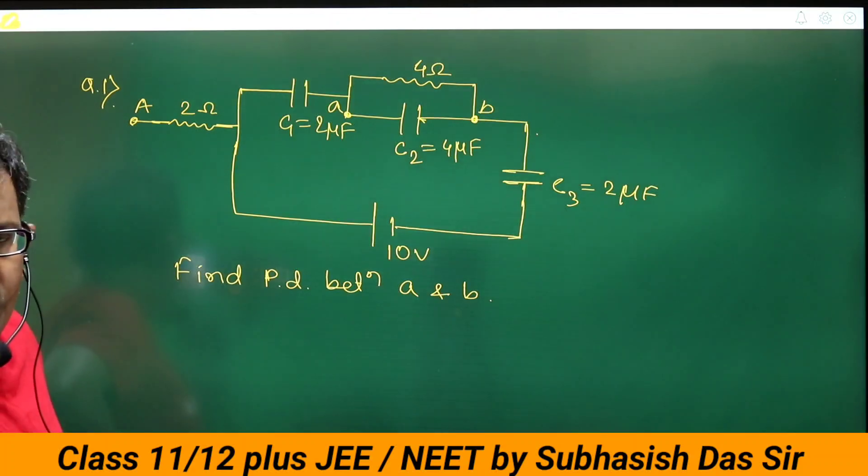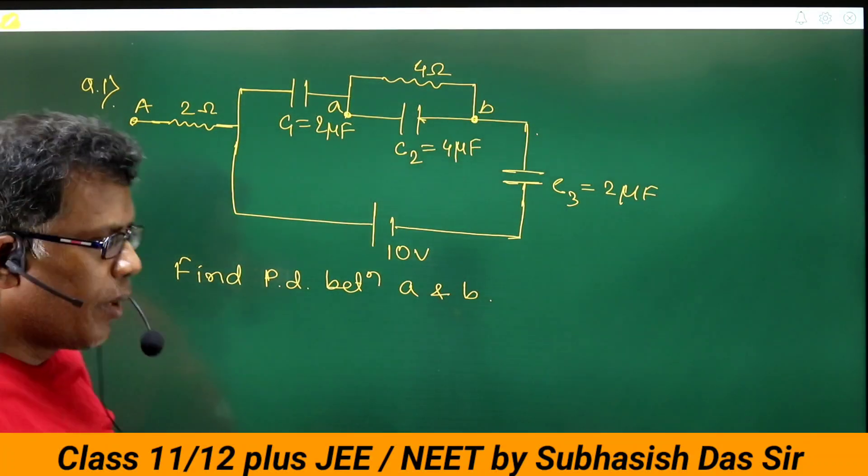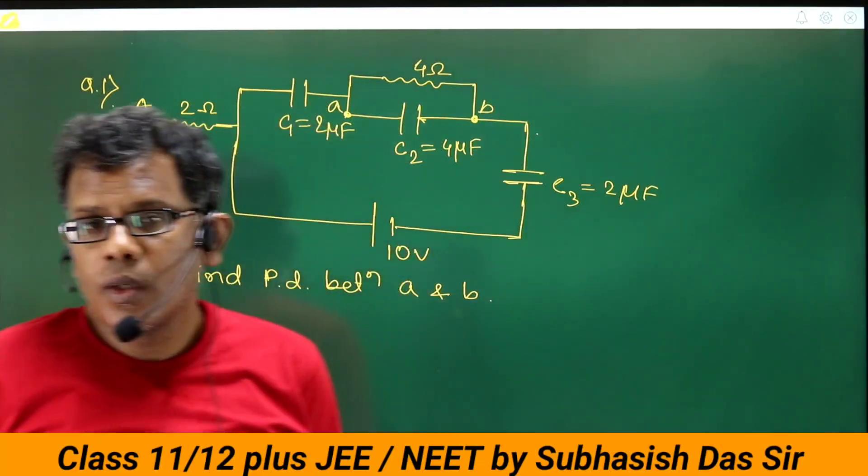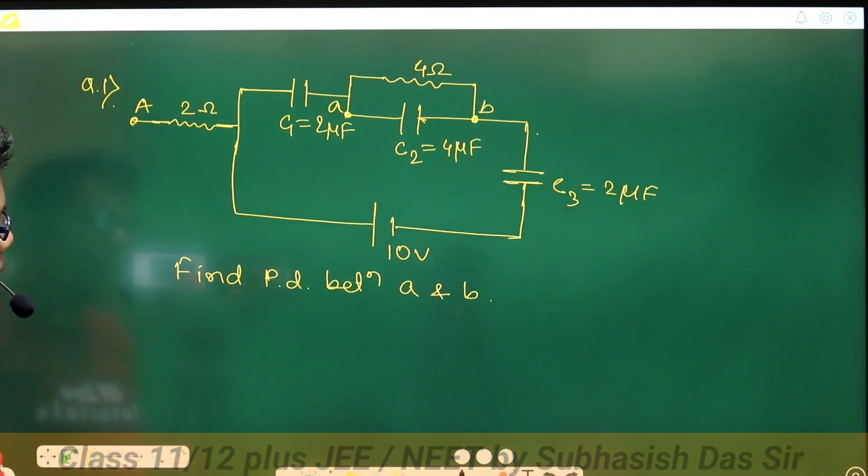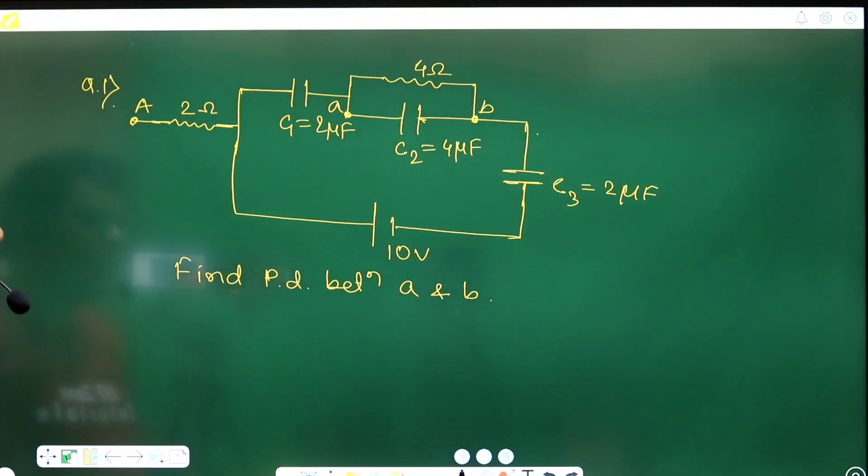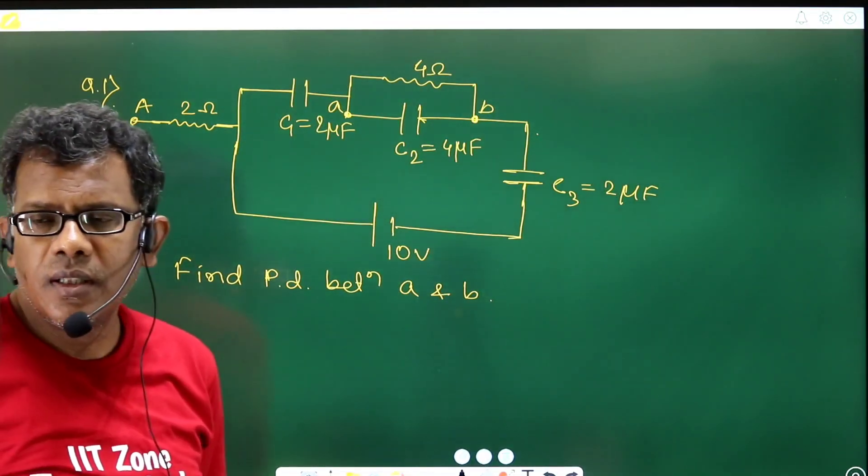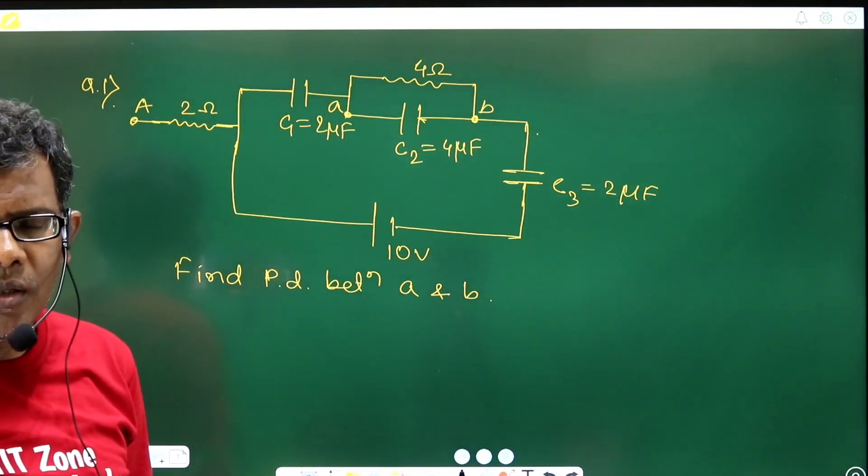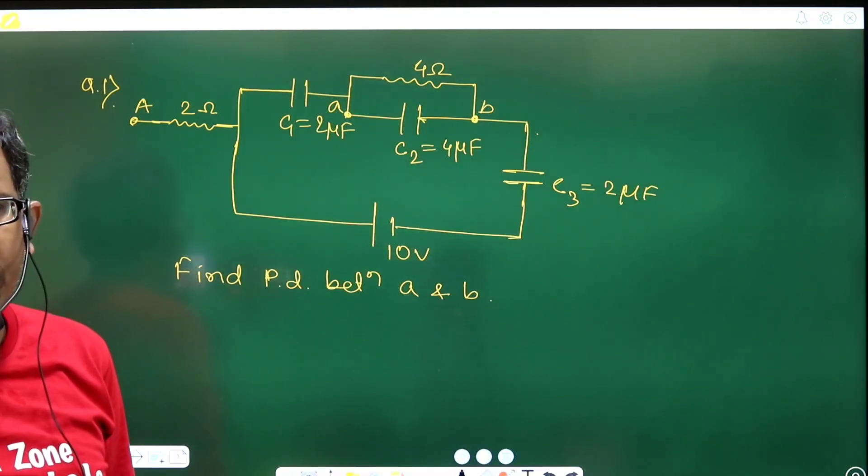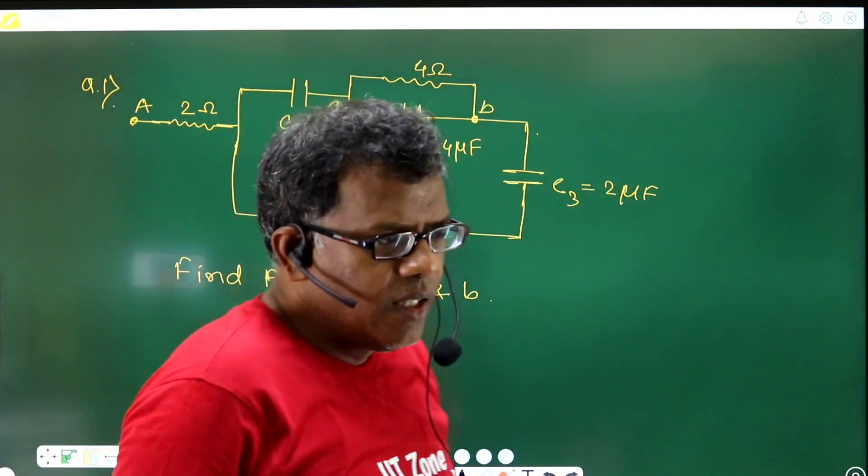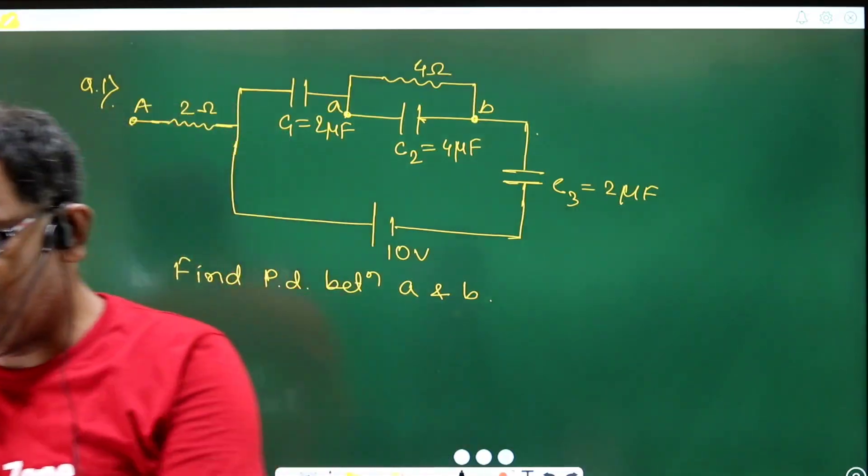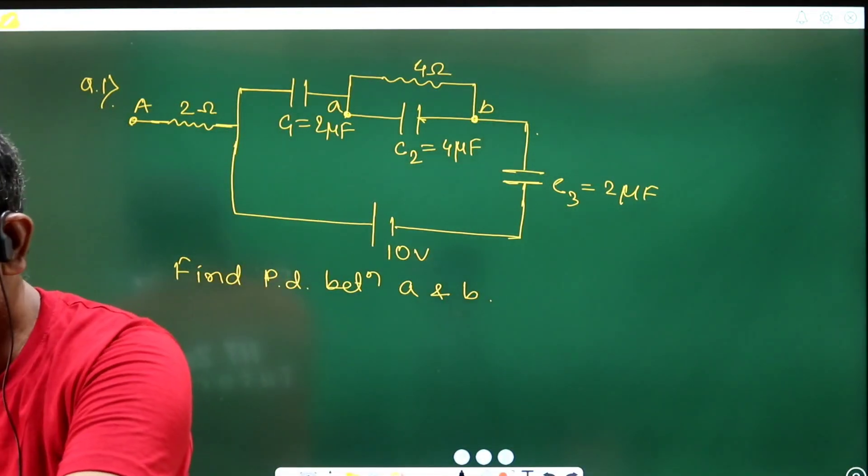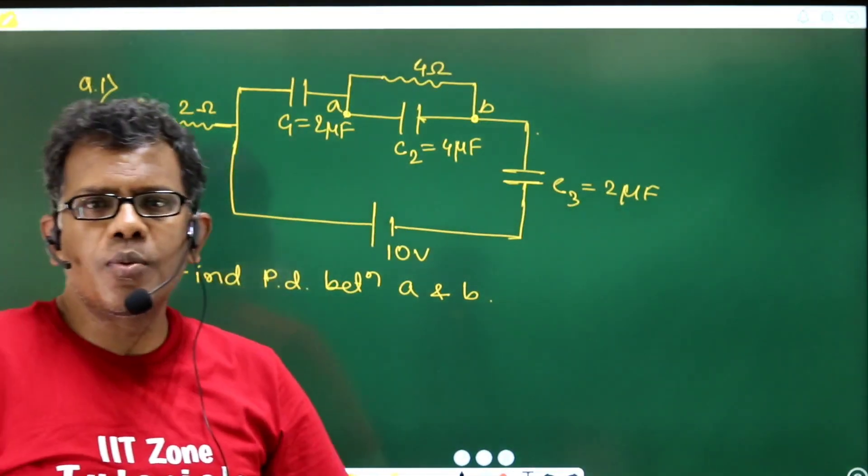Will that flow of charge be found to be getting divided between C2 and 4 ohm? How can you develop that argument where you can say that charge division will take place? Based on which principle? Being it is parallel, is it necessary that charge which is flowing through C1 will be getting divided for current resistance as well as for capacitor in between small a and small b?